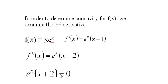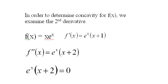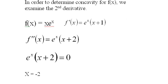But we do find some critical points when we set this to 0. e^x is never 0, but when x is negative 2, this expression will be 0. So x equals negative 2 is a point where this could change from being concave up to concave down.